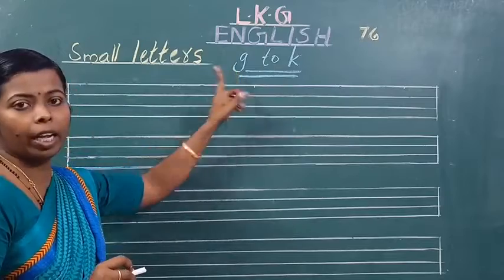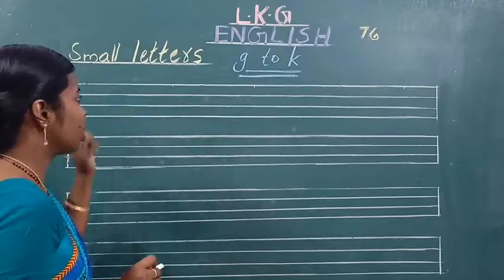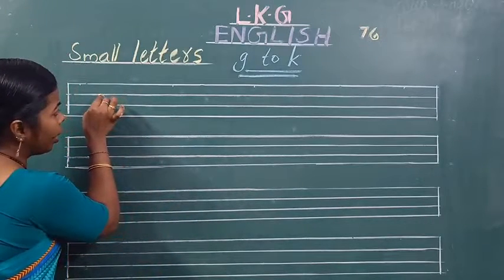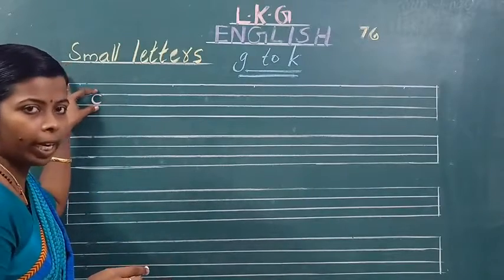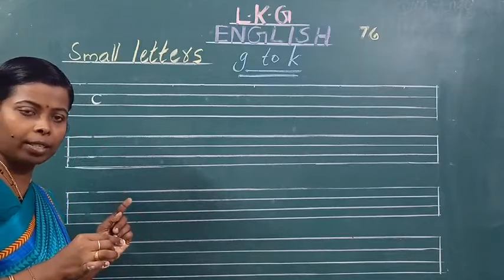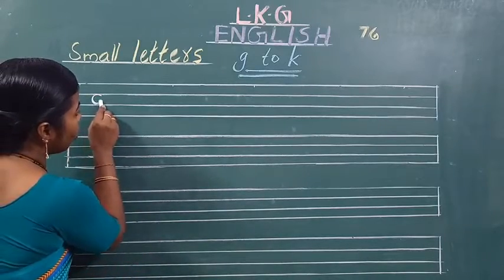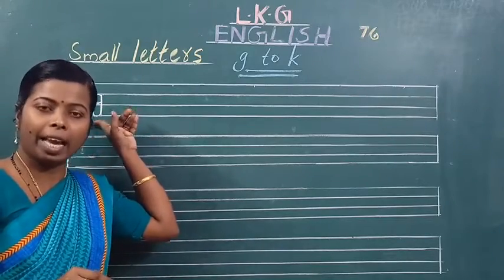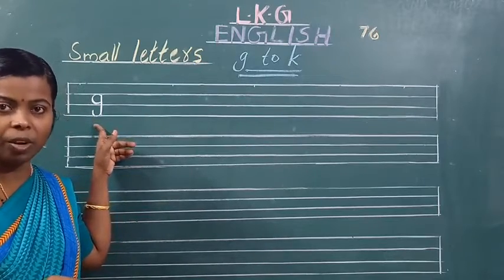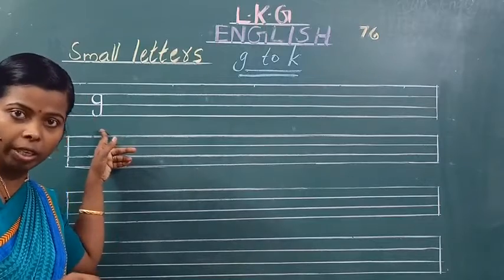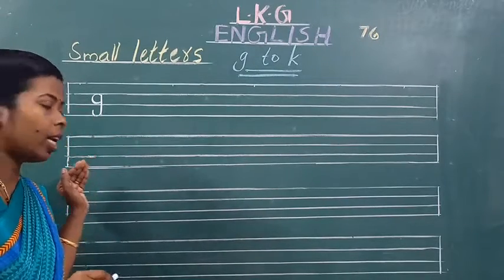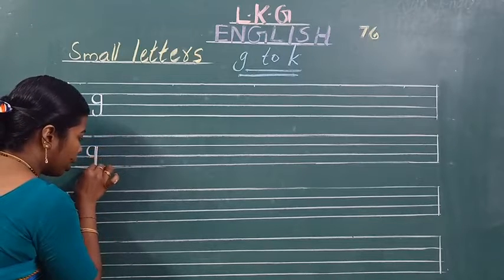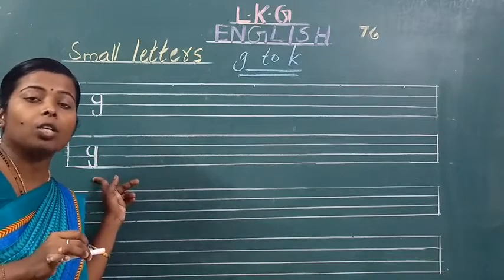Now we have to write G. G to K to write. We have to write — this is small letter G. This is small letter G. Got it? G. This is small letter G.